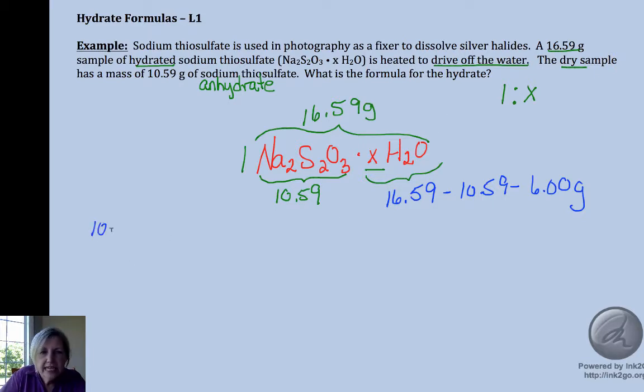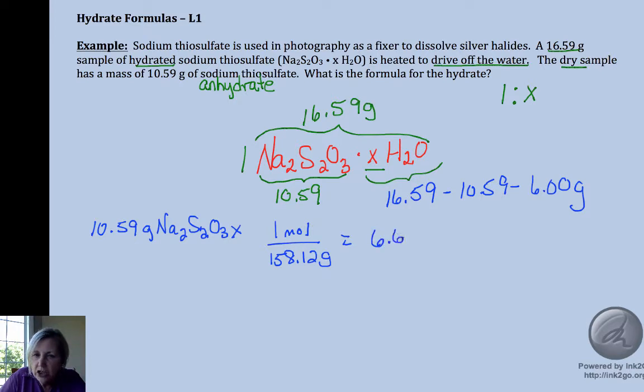So mass to moles, use molar mass. I'm going to use the molar mass of the salt, 158.12 grams, and again be really cautious about carrying a number of digits so you don't get rounding errors. And don't forget to bring that magnitude out of your calculator. That's a common thing we see when we're grading the AP test.